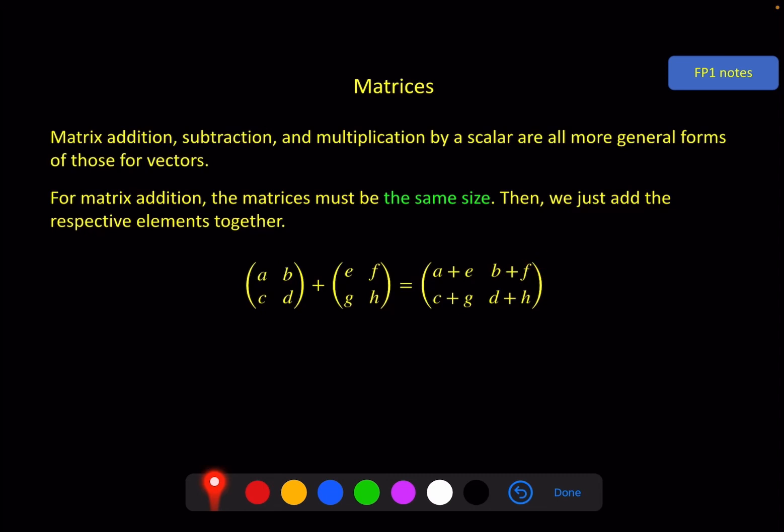Obviously the same here for subtraction. You can also see straight away from this definition that matrix addition is commutative. So it doesn't matter which of these two I put first. It will give me the same answer. So in general, A plus B is equal to B plus A. And you can see I've used the bold capital letters here to stand for these matrices. That's a fairly standard notation.